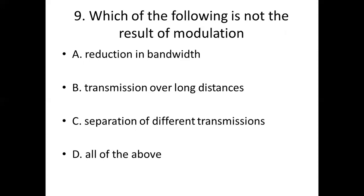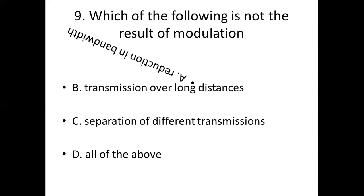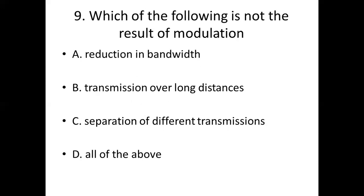Ninth bit. Which of the following is not the result of modulation? Option A, reduction in bandwidth. Option B, transmission over long distance. Option C, separation of different transmissions. Option D, all of the above. Answer: Option A, reduction in bandwidth.